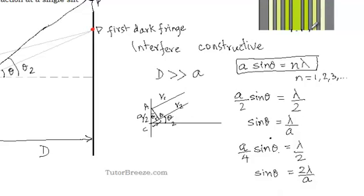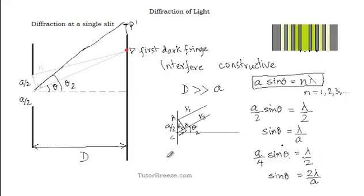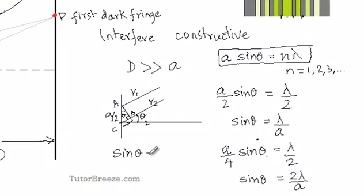Since these are all dark fringes, the bright fringes are positioned in between the dark fringes. The bright fringes would be at sinθ = (n + ½)λ/a.